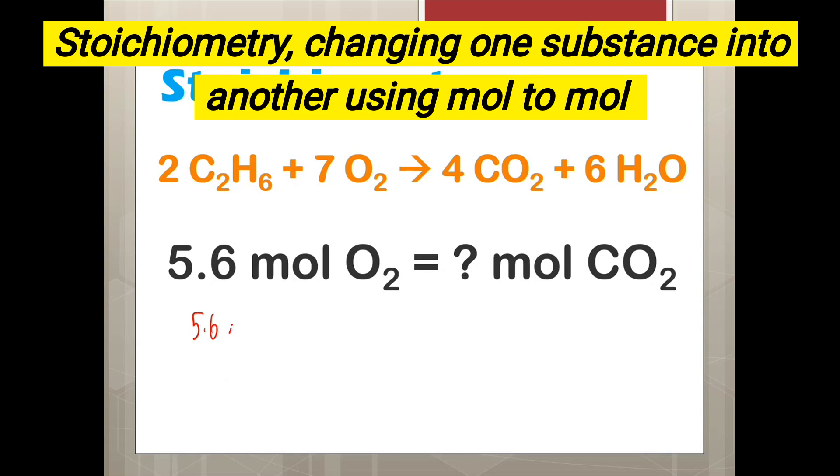We start with 5.6 moles of O2. We then times line, and we bring moles of O2 down. Now, here, we have mole, and we want to go to moles of something else. We can do that in one step using this thing called stoichiometry, where we go moles of one thing to moles of another. When we do mole to mole, we need to get our numbers not from our heads, but from the equation.